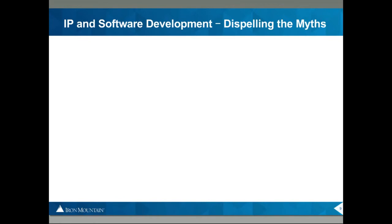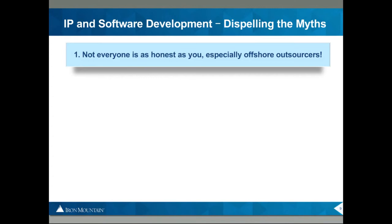To kick things off, let's dispel the myths of IP and software development. First, not everyone is as honest as you. You might enter into a software development relationship with the best of intentions, but remember it's business — if there's a way to generate money outside the relationship, they will. They'll take work created for you and leverage it across multiple clients, potentially leading to litigation over patent infringement, copyright infringement, or misappropriation of intellectual property. It may be cheaper to outsource development work, but beware of the IP laws governing your relationship, or outsourcers who simply don't care about the laws.